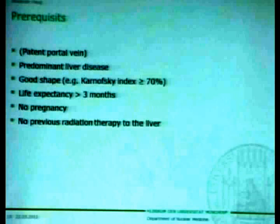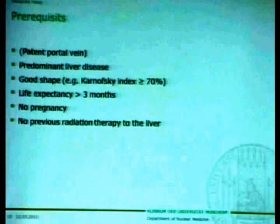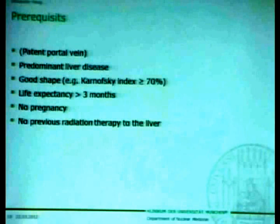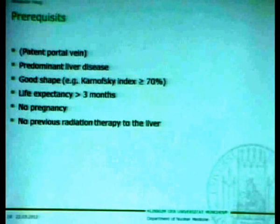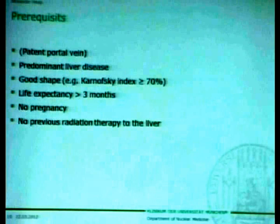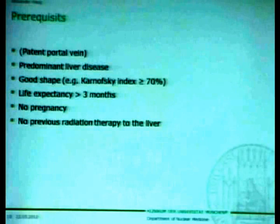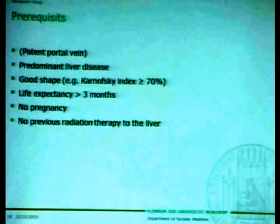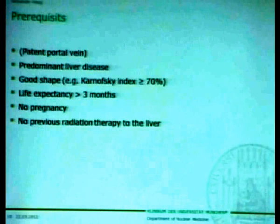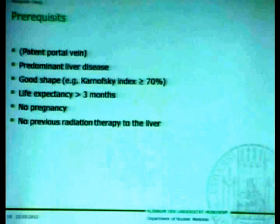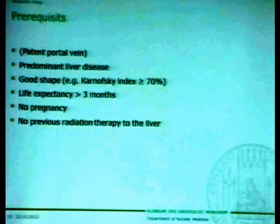There are some other prerequisites. A patent portal vein — I have it in brackets, because in former days we had to ensure the portal vein was patent, but recent studies have shown we can treat patients even with portal vein occlusion on a safe basis. The liver disease should be predominant, meaning most of the tumor should be within the liver. The patient should be in quite good shape — Karnofsky index above 70 or ECOG status 0-1. Life expectancy should be above 3 months, the patient must not be pregnant, and no previous radiation therapy to the liver should have been performed.